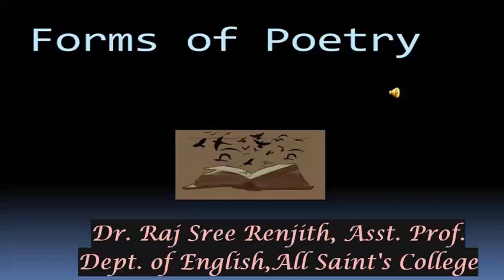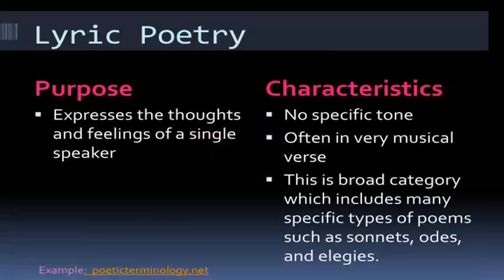In this class we will discuss various forms of poetry. We have three broad categories: Lyric Poetry, Narrative Poetry, and Dramatic Poetry. Lyric Poetry is mainly sung with the accompaniment of the instrumental lyre — that was initially the case. Narrative poetry narrates a story, and dramatic poetry has elements of drama.